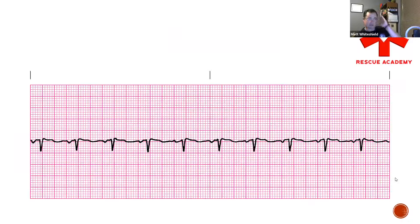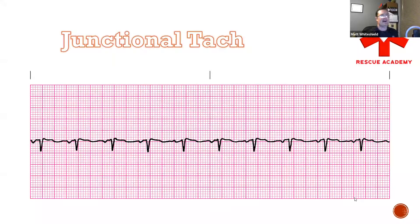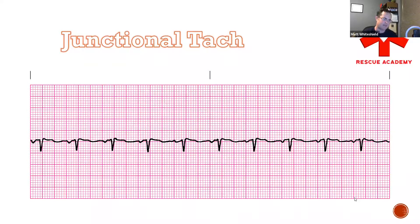Let's take a look at this one. We got inverted P-waves. We have a rate — counting up to 10 R-waves, a rate of 100. This is where things get a little finicky. Remember, anything greater than 100 would be considered junctional tach; anything less than 100 but greater than 60 is considered accelerated. This is junctional tach because there's a beat right here at the end — it's pretty close — so this rate is just over 100.